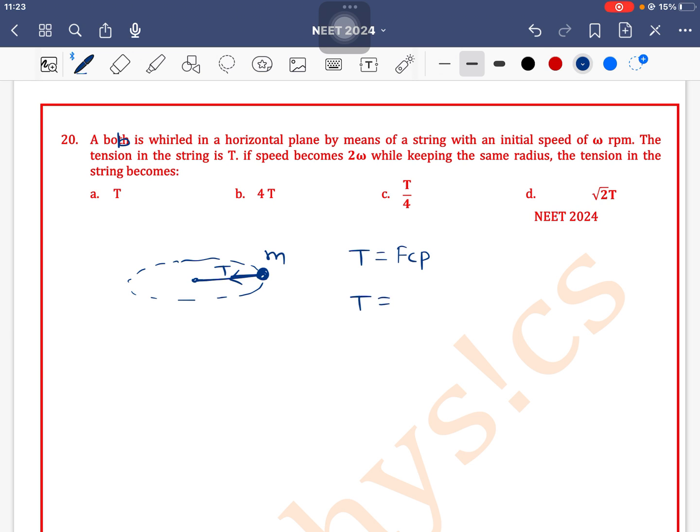The value of centripetal force is m omega square r. As m is constant and r is constant, tension is directly proportional to omega square. So T₂ by T₁ is equal to omega 2 by omega 1 squared.